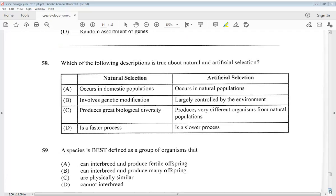Question 58. Which of the following descriptions is true about natural and artificial selection? So the answer for 58 is going to be C. Produces great biological diversity and the artificial selection produces very different organisms from natural populations.